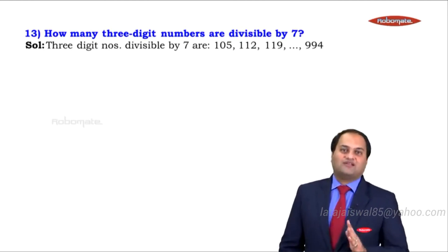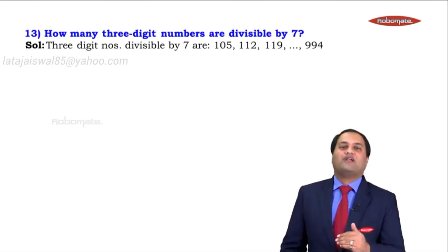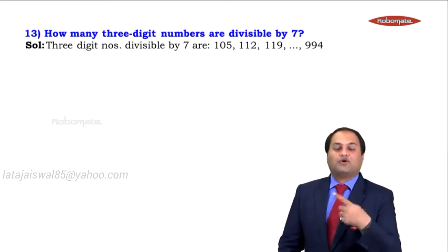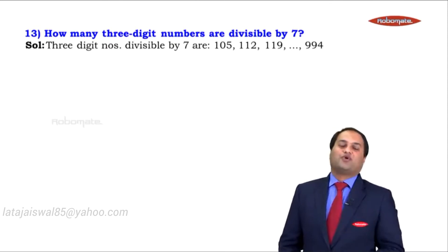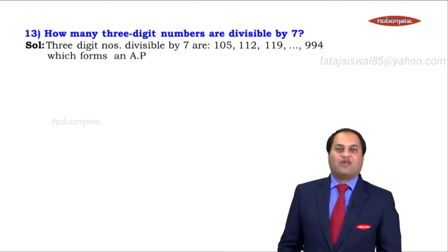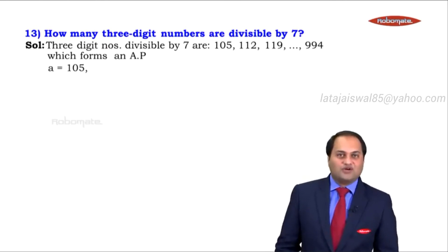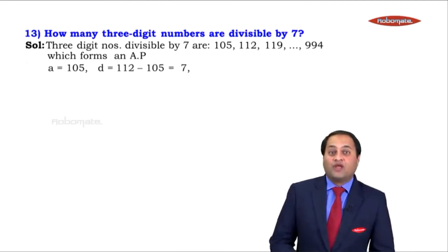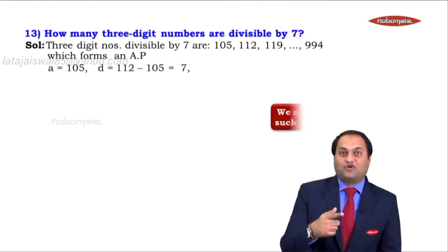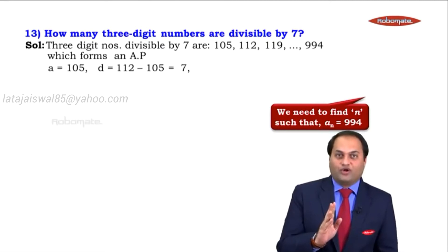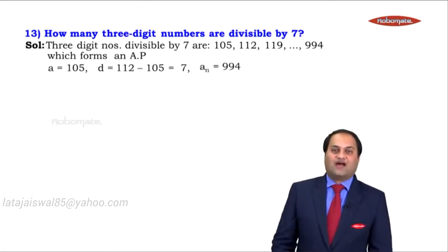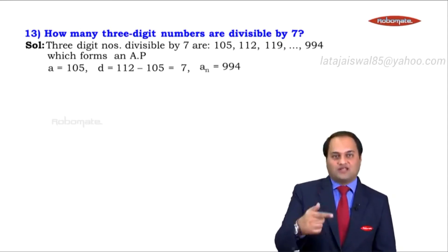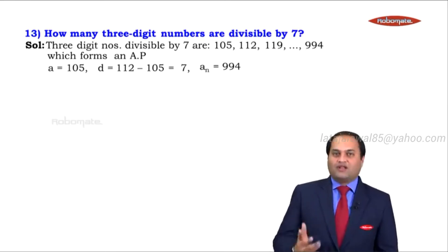This was the only part to understand — the rest we've already done before, finding the number of terms in a finite AP. So here, A = 105, D = 112 − 105 = 7, and the last term AN = 994. We need to find N such that AN = 994.